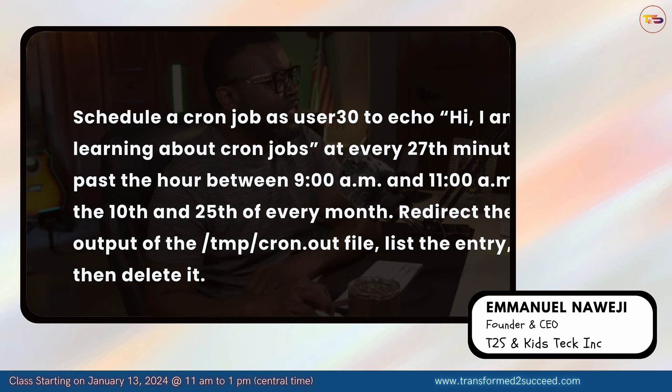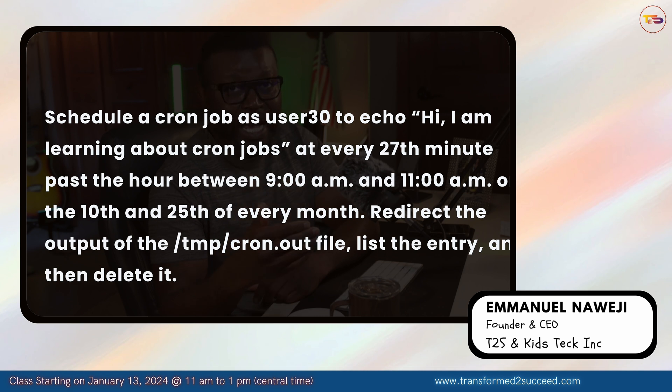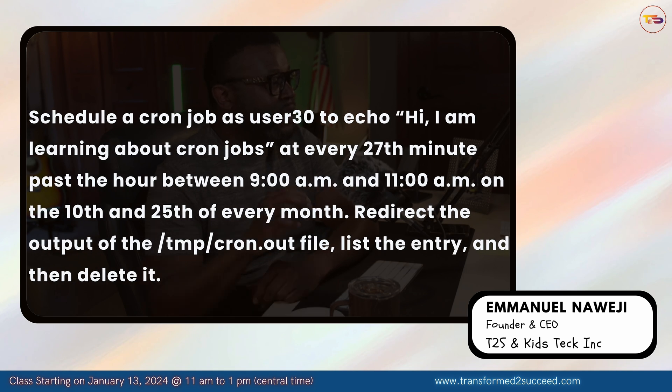Hi, Emmanuel with T2S Transform to Succeed. In this video I'm going to walk you through the steps on how you can schedule cron jobs on a Linux operating system. The goal is to schedule a cron job as user30 to echo the sentence 'Hi, I am learning about cron jobs' at every 27th minute past the hour between 9 a.m. and 11 a.m. on the 10th and the 25th of every month.